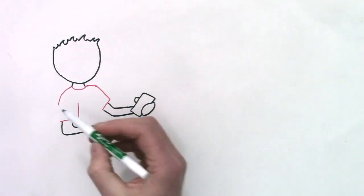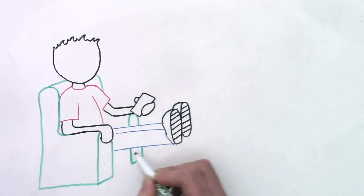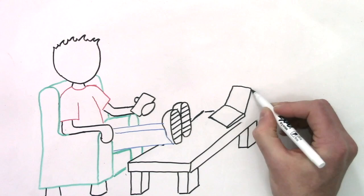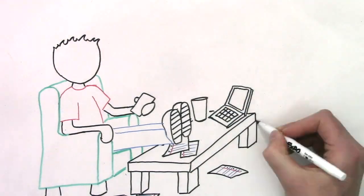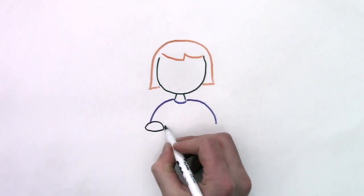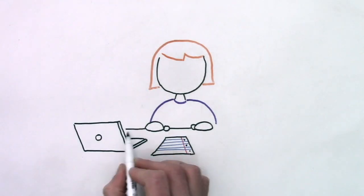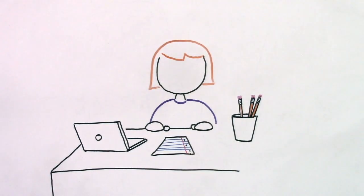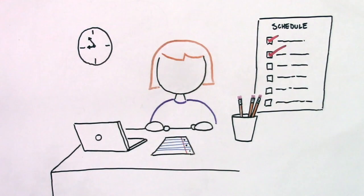First off, consider the working environment your child has at home. Where does your child do their schoolwork? Are they sitting on the couch in front of a TV with a cell phone nearby? Or do they have a desk or a kitchen table to work at, away from electronic temptations? Help your child to set up a work area that has as few distractions as possible.